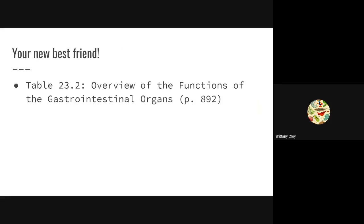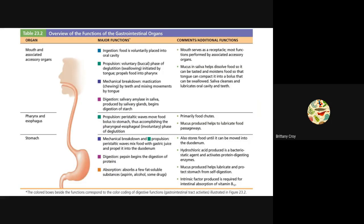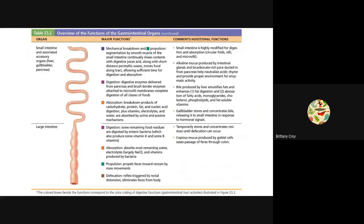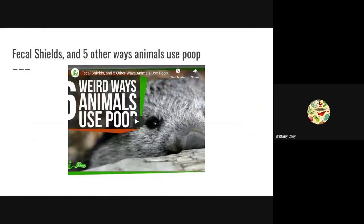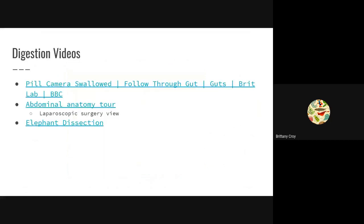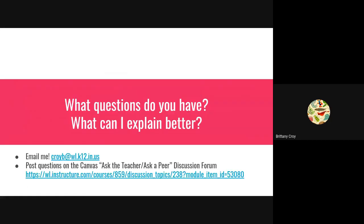I want to point you to table 23.2 in the book. It has an overview of this entire unit — all of the organs, the different digestive processes — and describes them really well, so you might find that helpful. There are also some great videos about digestion linked here. Please reach out with any questions. Thank you.